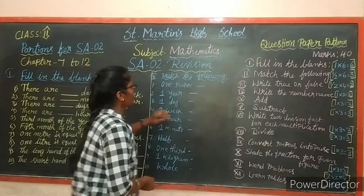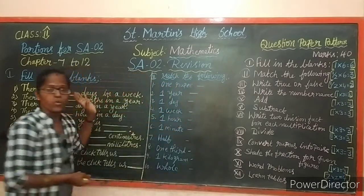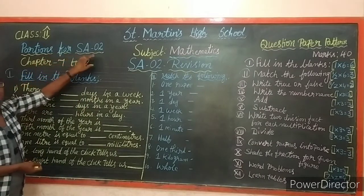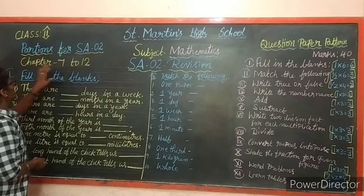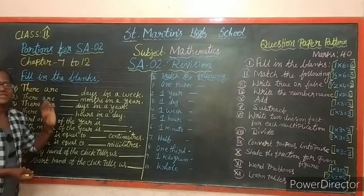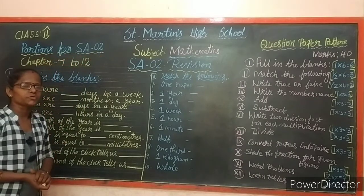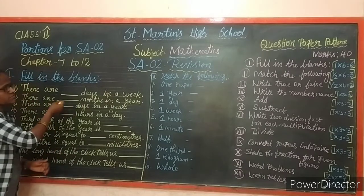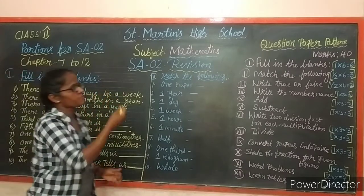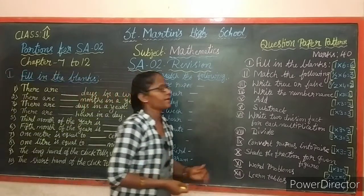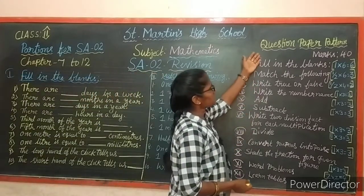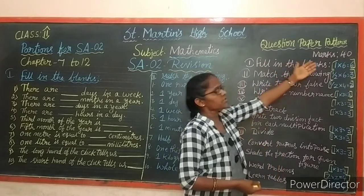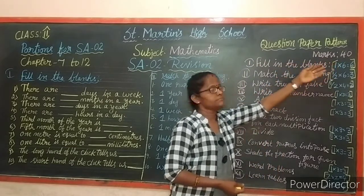First, let us know the portion for SA2. Questions for SA2 will be from chapters 7 to 12. Now let us go through the paper pattern.